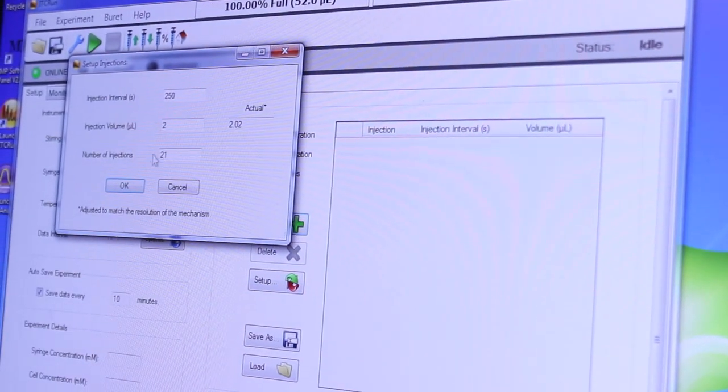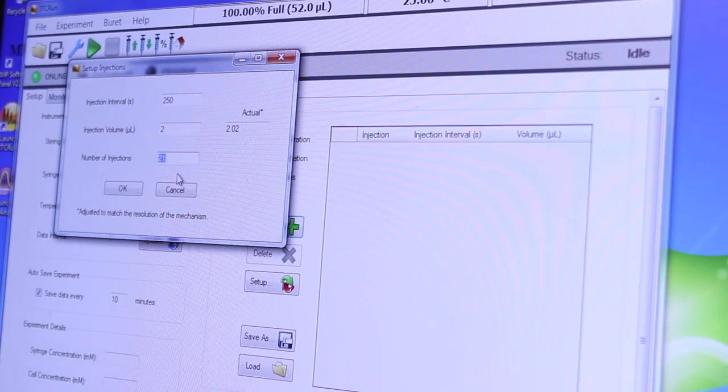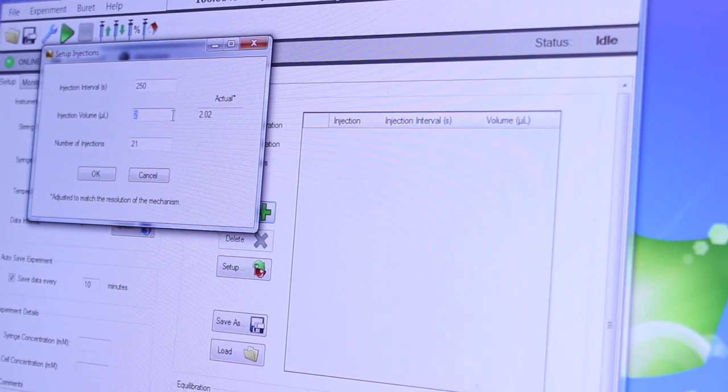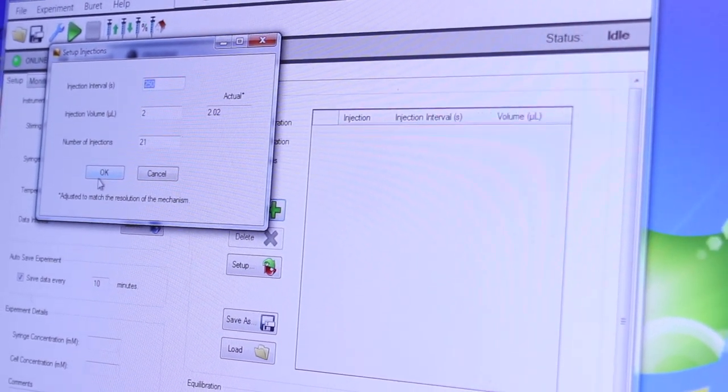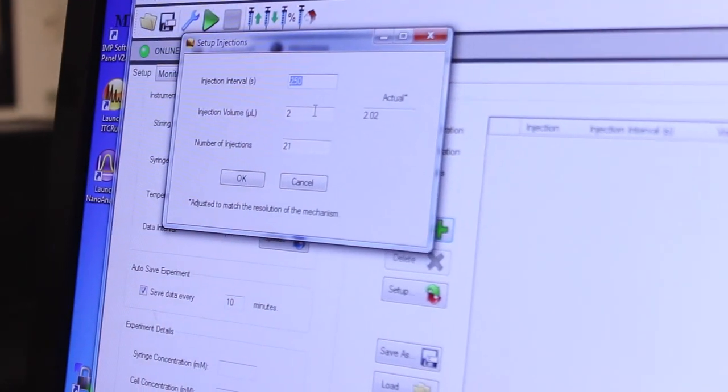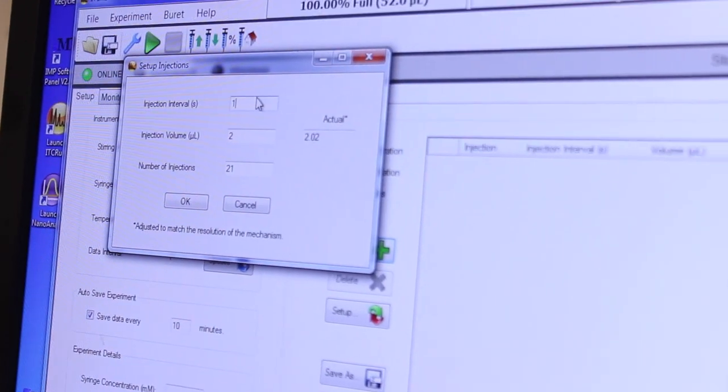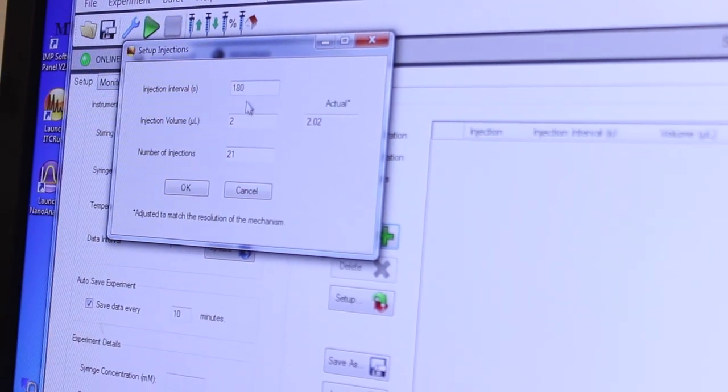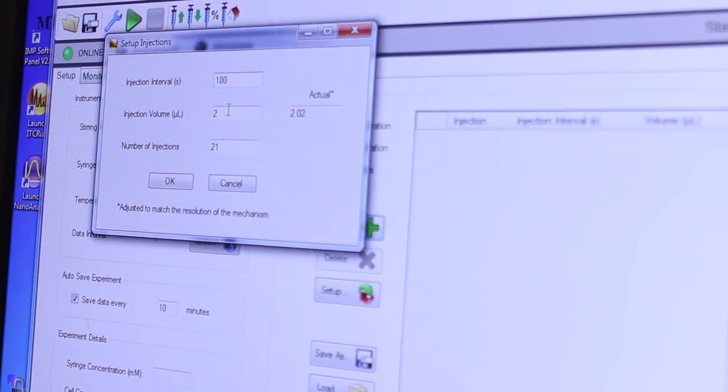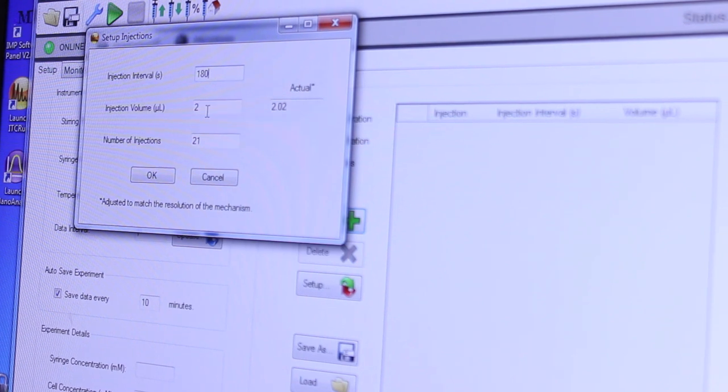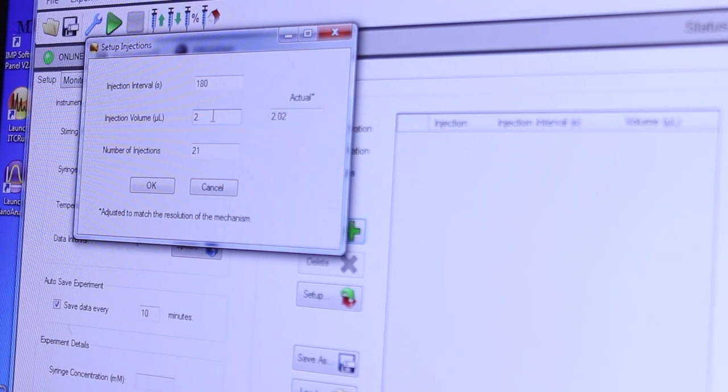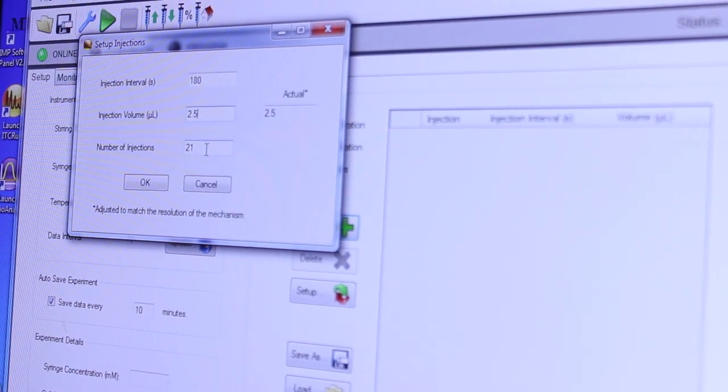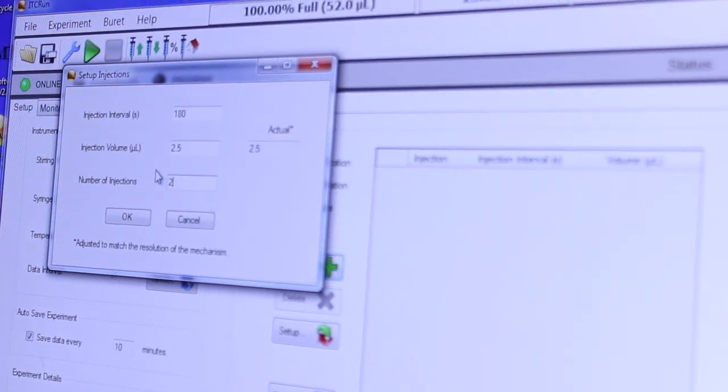Alternately you could click delete to delete all the entries and then click insert and it would allow you to specify a number of injections the volume and the interval so let's for example let's go for 180 seconds with an injection volume of 2.5 microliters and a total number of injections of 20.